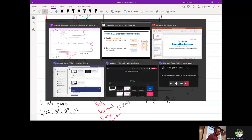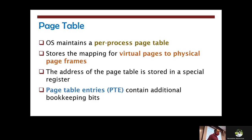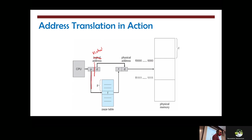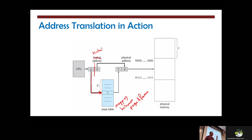The page table is a data structure that contains the mapping between virtual pages and the physical frames they map to. To translate: split the virtual address into page number and offset, use the page number to index into the page table (stored by the OS), get the physical frame number, concatenate it with the offset to get the physical address.